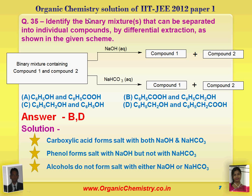In question 35: identify the binary mixture that can be separated into individual compounds by differential extraction. Two compounds are treated with NaOH and sodium bicarbonate separately. Carboxylic acid forms salt with both NaOH and sodium bicarbonate. Phenol is a weak acid and only forms salt with NaOH, not sodium bicarbonate. Alcohol is even weaker and does not form salt with either base. So separation can be done with NaOH and sodium bicarbonate in the case of carboxylic acid and phenols. Answer is B and D.